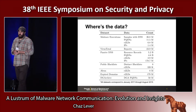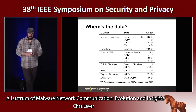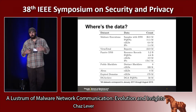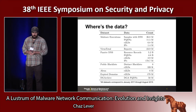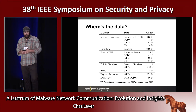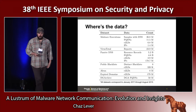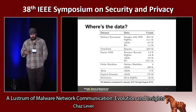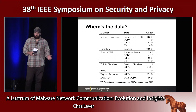Additionally, we had another large passive DNS data set collected from a major US ISP. In that data set, we had about 2.9 million effective second-level domains that were associated with malware.